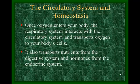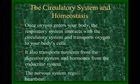Homeostasis is always important to discuss. Once oxygen enters the body, the respiratory system interacts with the circulatory system where gas exchange takes place in the alveoli, and then oxygen is transported to body cells. The circulatory system also transports nutrients from the digestive system and hormones from the endocrine system. The nervous system regulates the heartbeat automatically.